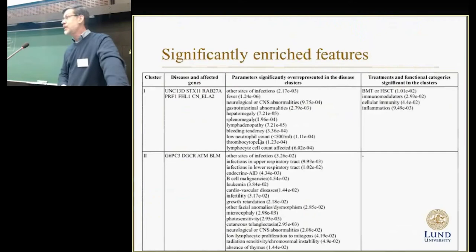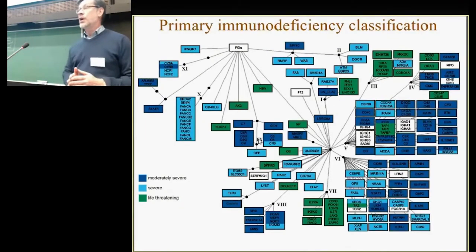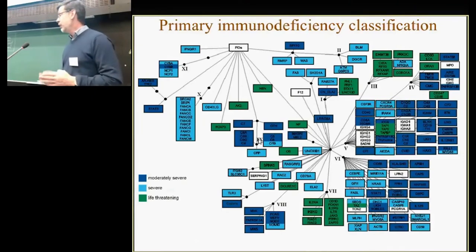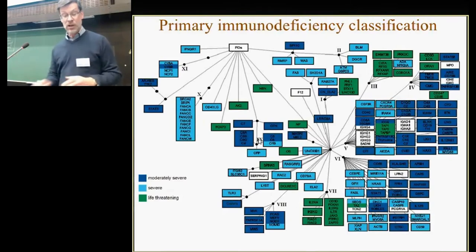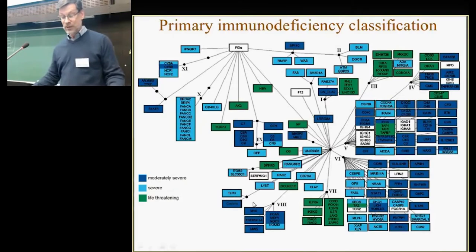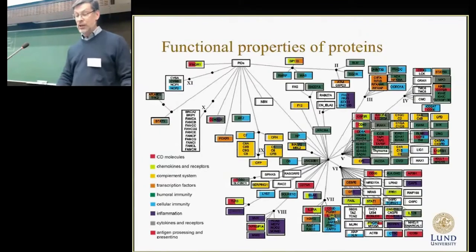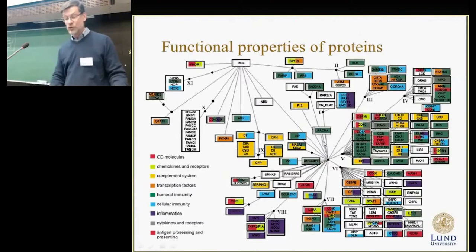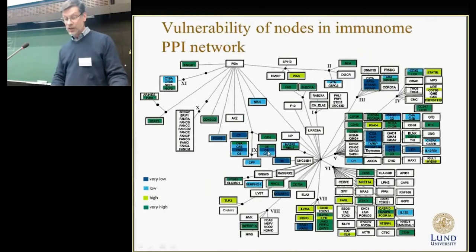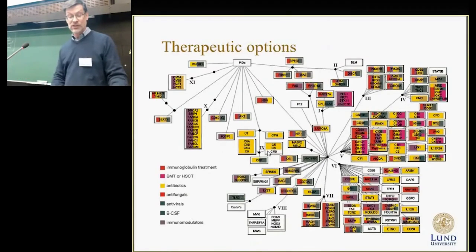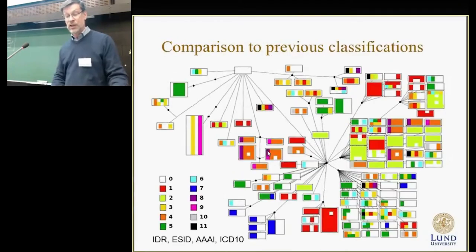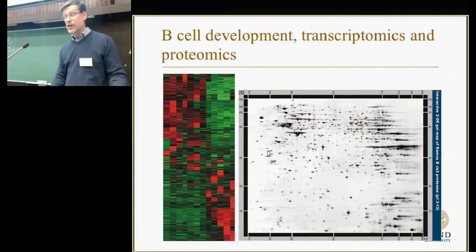We looked at what features were typical for each cluster. I'm showing a number of figures to verify this classification on data not used for the classification. Looking at severity indicated with different colors, many disease clusters have the same color. Looking at functional properties, there are differences in clusters but some are very homogeneous. Looking at network vulnerability, again this indicates the classification is working. Therapeutic options show the same pattern, and comparison to previous classifications confirms it — indeed the classification makes sense.